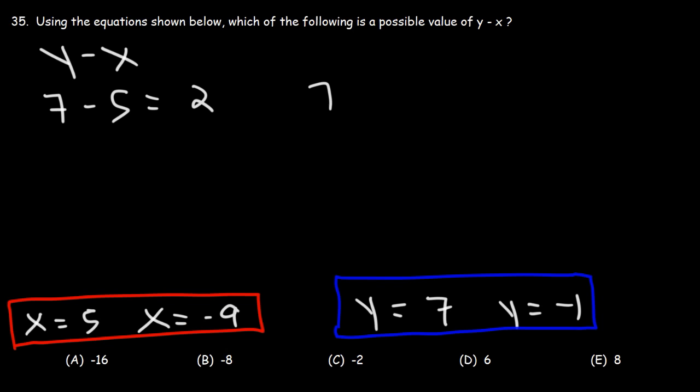Now, when y is 7, x can be negative 9. So we have 7 minus negative 9, which is 7 plus 9. That's 16. So far, we have two possible answers. None of these are listed yet.